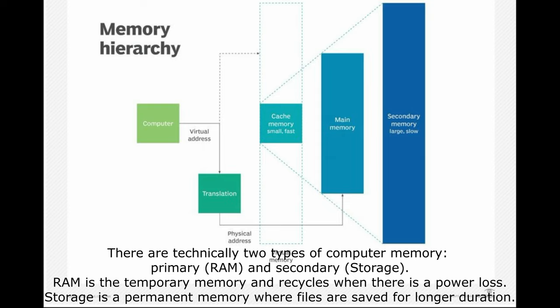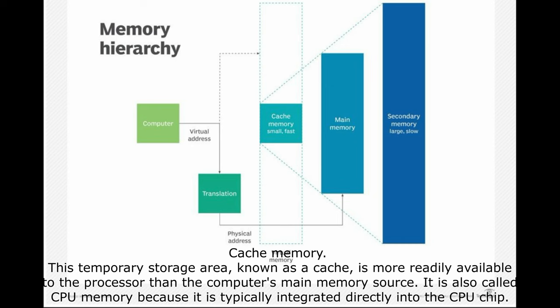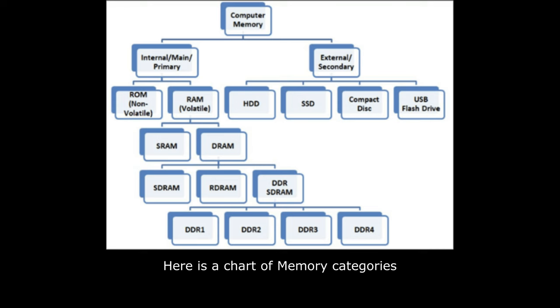RAM is the temporary memory and recycles when there is a power loss. Storage is permanent memory where files are saved for longer duration. Cache memory — this temporary storage area, known as a cache, is more readily available to the processor than the computer's main memory source. It is also called CPU memory because it is typically integrated directly into the CPU chip. Here is a chart of memory categories.